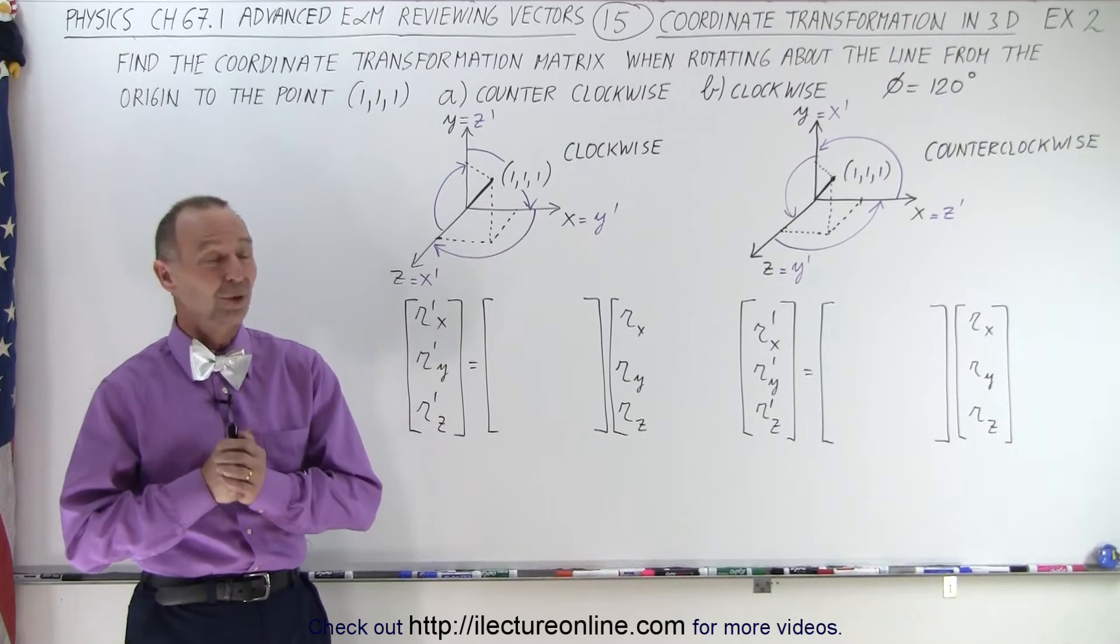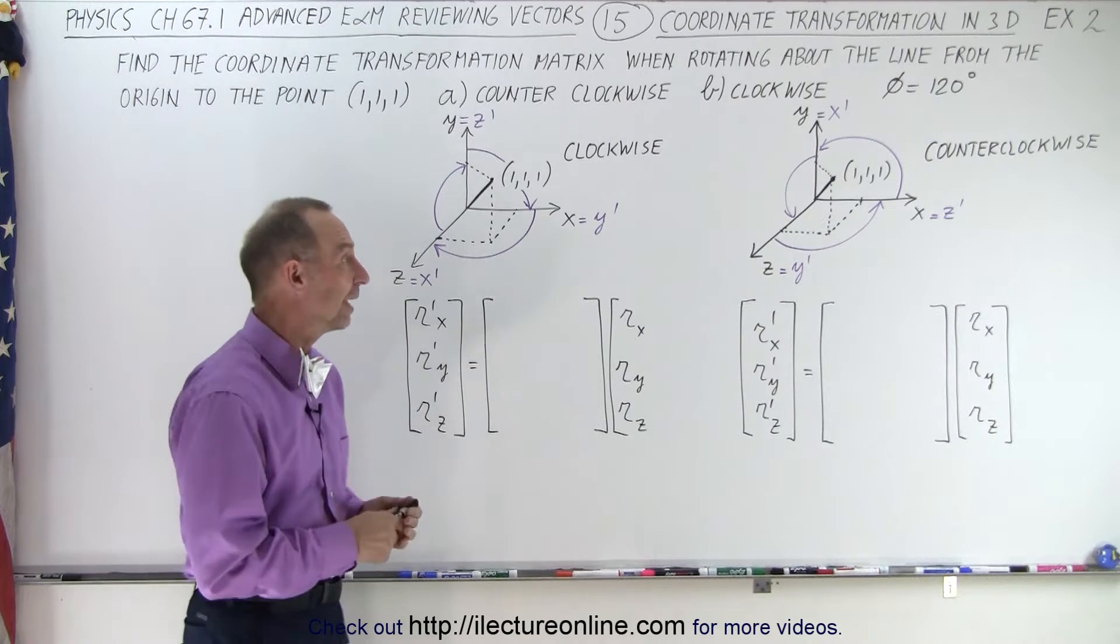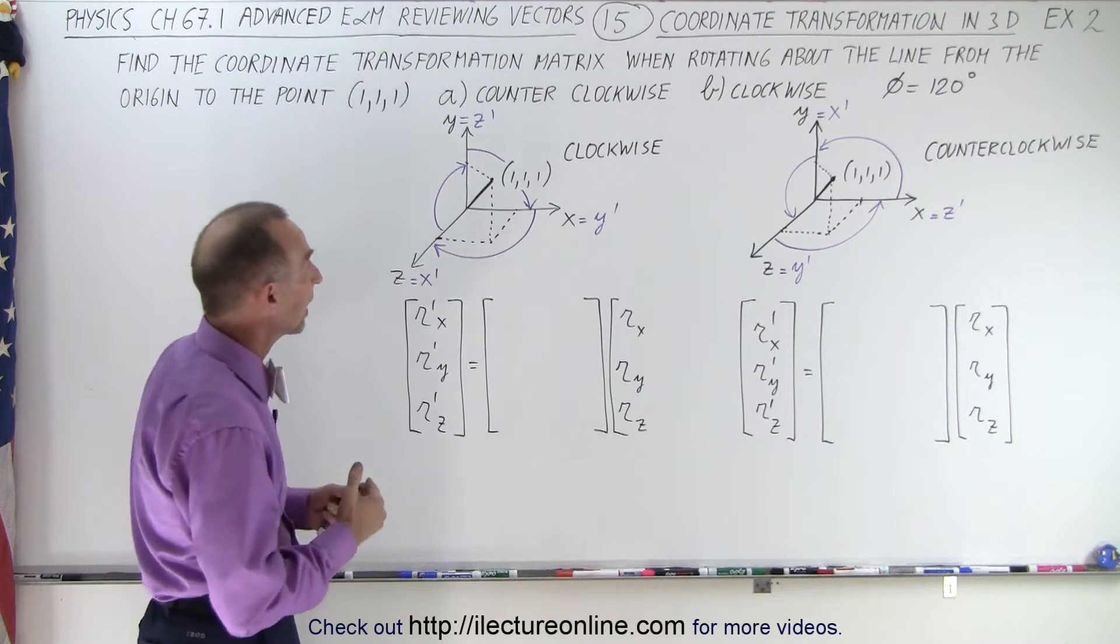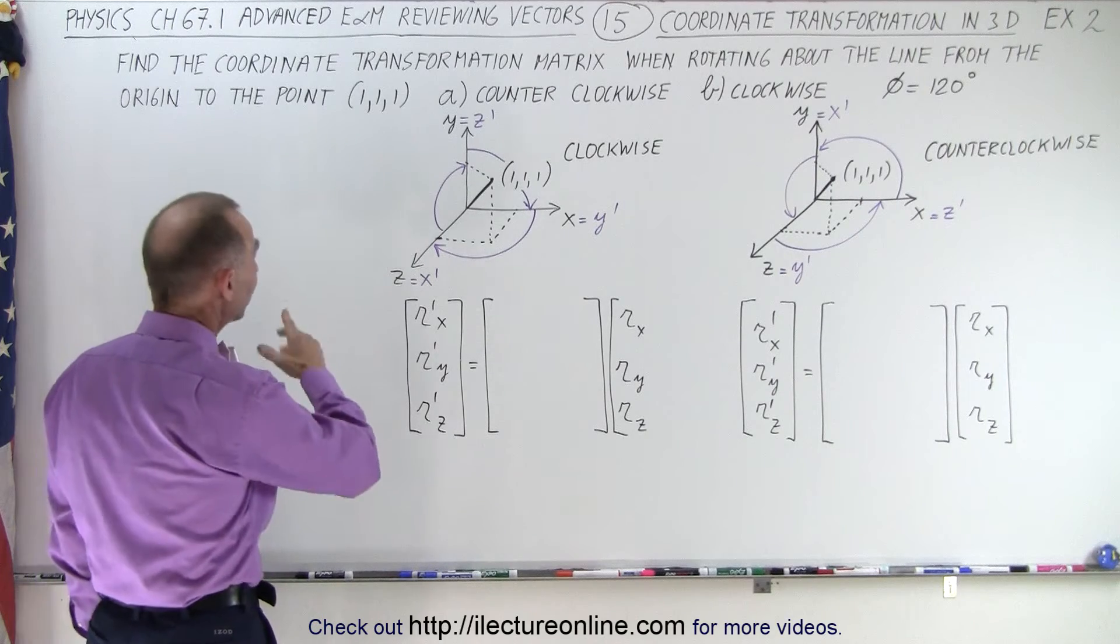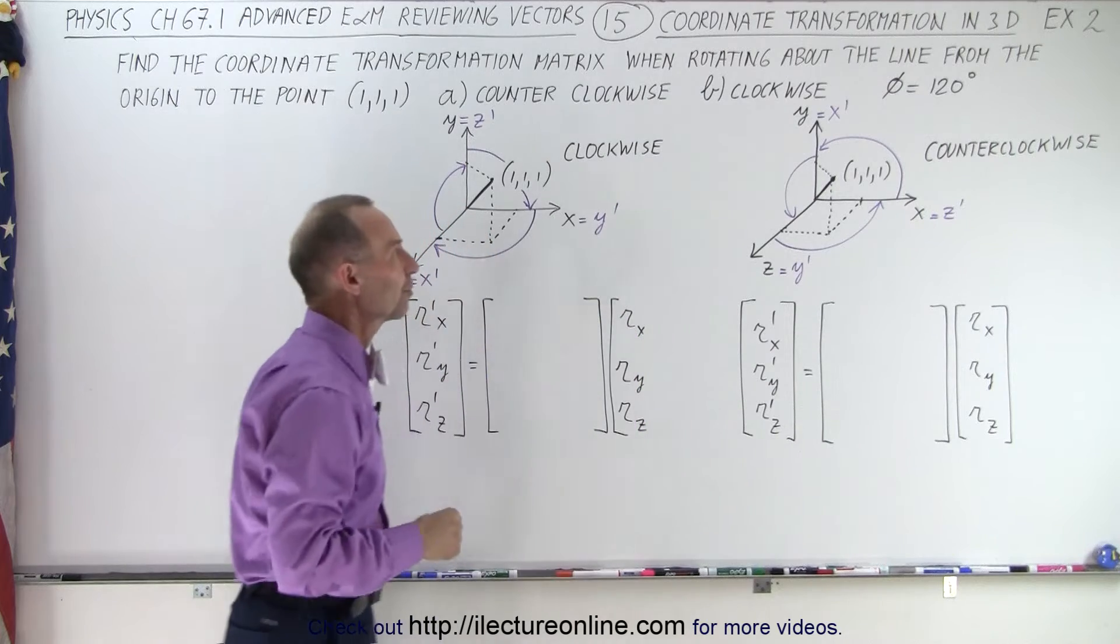Welcome to our lecture online. Here's another example of how to do a transformation in three dimensions. We have the XYZ axis, the original XYZ axis in black. Notice that we need to find the transformation matrices for these two transformations.